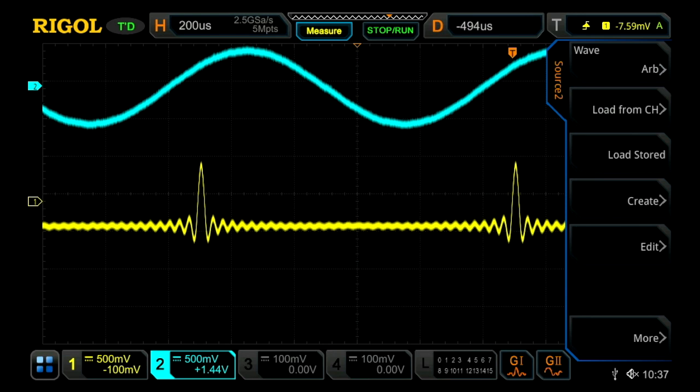If we go ahead and click on this, it brings up our menu. With this we can actually choose a couple of different options to load an arbitrary waveform file. We can choose to load off one of the analog channels, load a stored waveform, or create our own and then edit them.